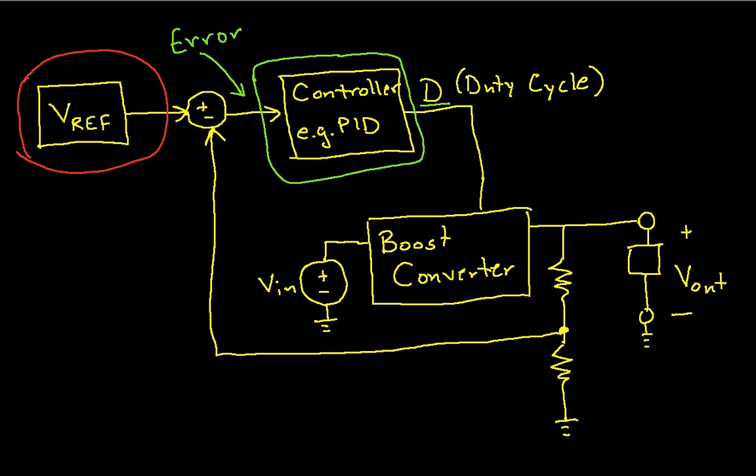The boost converter itself is a circuit. This circuit consists in its simplest incarnation of an inductor, a diode, a switch, and a capacitor.